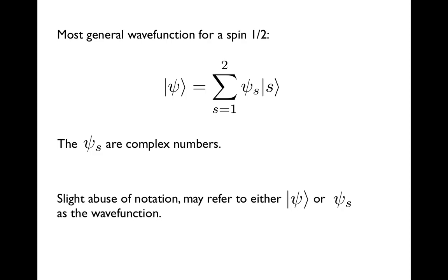And in a slight abuse of notation, we may either call this linear combination of these basis states, the wave function ψ as a ket, or we could just refer to ψ_s, which is a complex vector with two elements. We could call that the wave function.